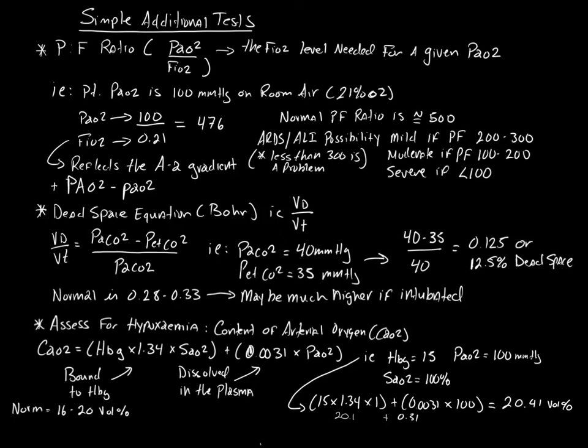Just a few additional tests that you might be able to do if you have ABG. The first one is called the PF ratio. This is really cool, it's really easy to calculate. It is the PaO2 divided by the FiO2. Basically what this tells us is what PaO2 is associated with FiO2.